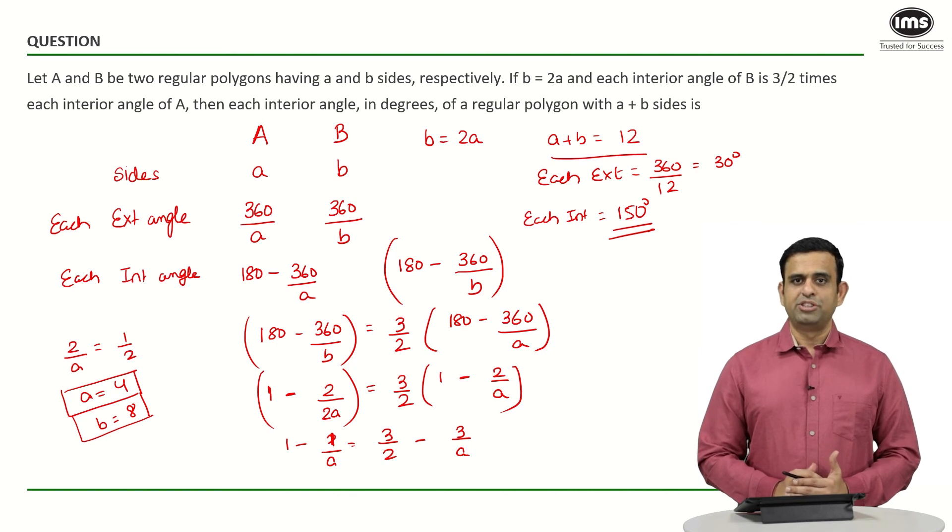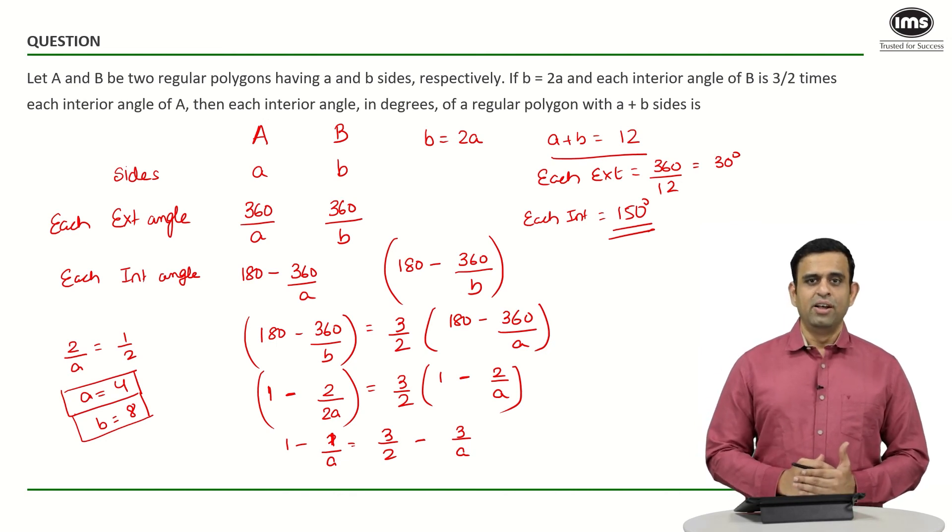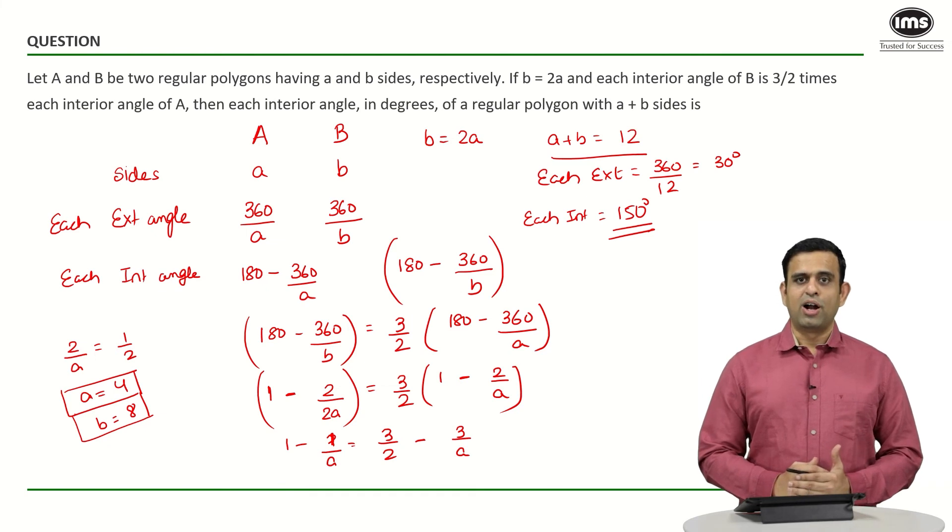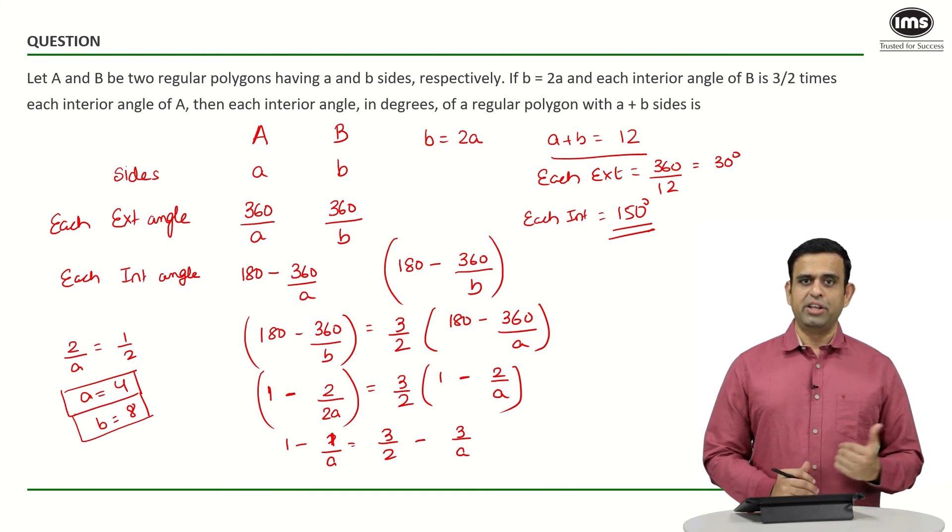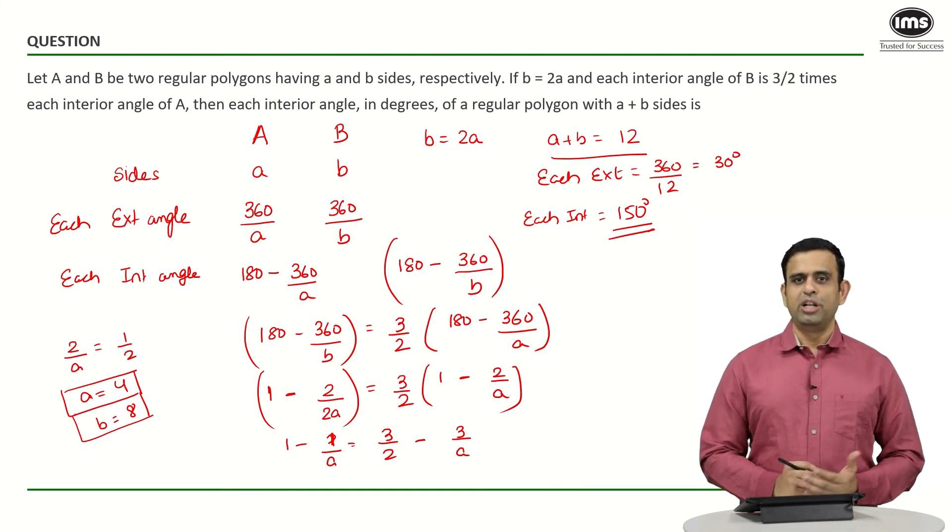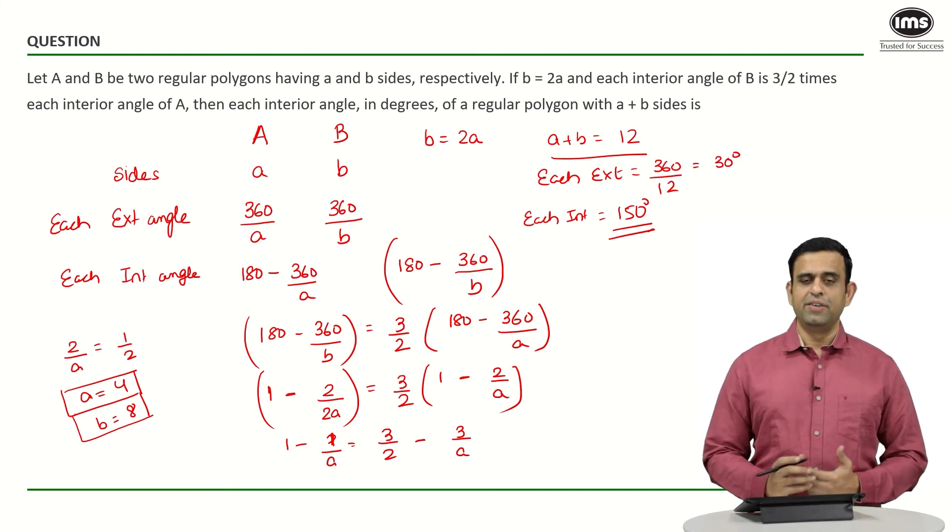One thing I want to share is that this is the only sum in CAT 19 where I made a mistake and marked 12 as the answer. All my 33 other questions were right, but I still got 100 percentile. So don't make the mistake of not reading the sum very carefully. Even if I can make a mistake, you can also make a mistake.